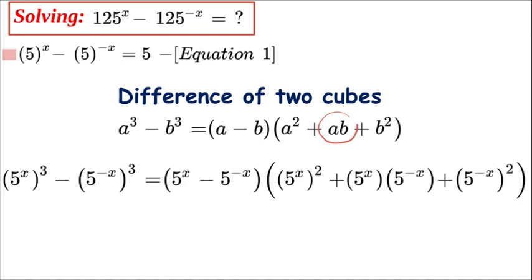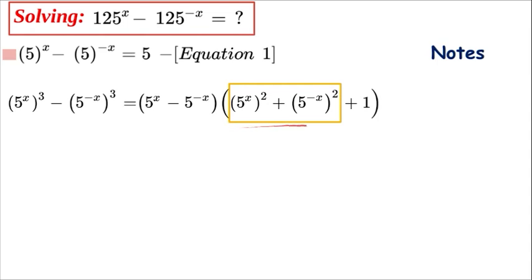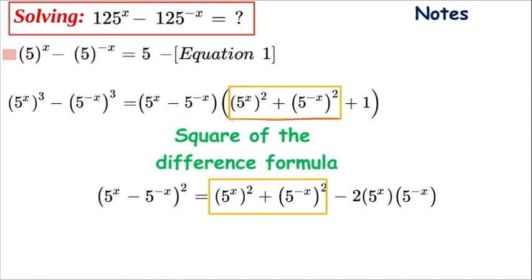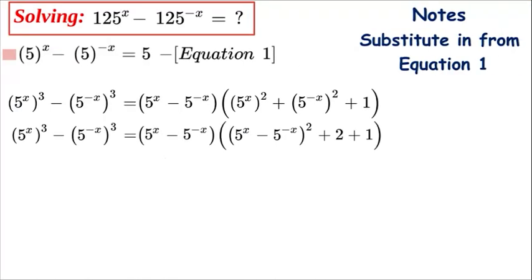Now we concentrate on the ab term: 5^x multiplied by 5^(−x). Since 5^(−x) equals 1 over 5^x, the product is just 1. So we replace that term with 1. The second bracket becomes (5^x)^2 plus (5^(−x))^2 plus 1. We work on this further, bringing in the negatives and adding an extra 2, so we replace it accordingly.